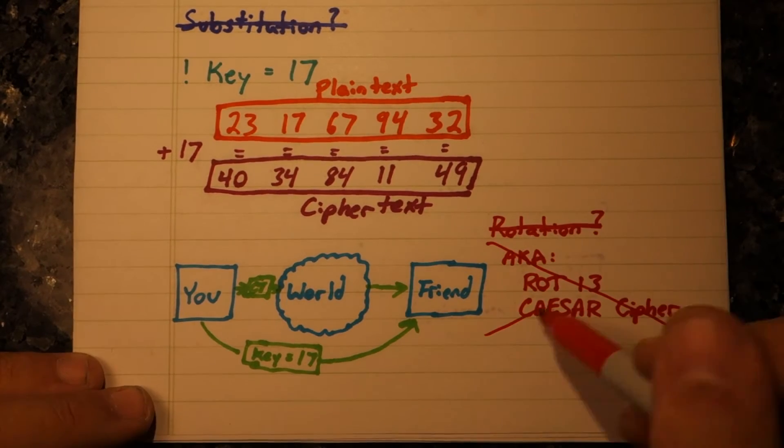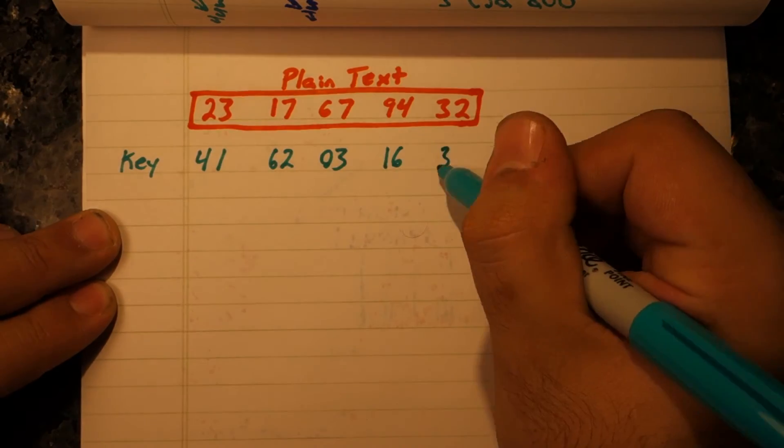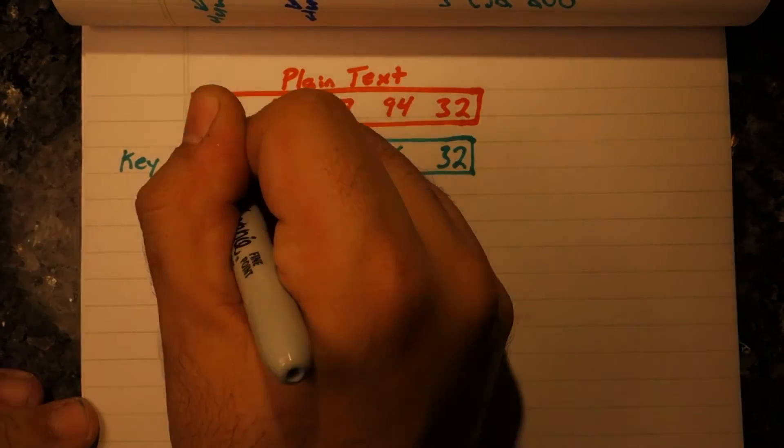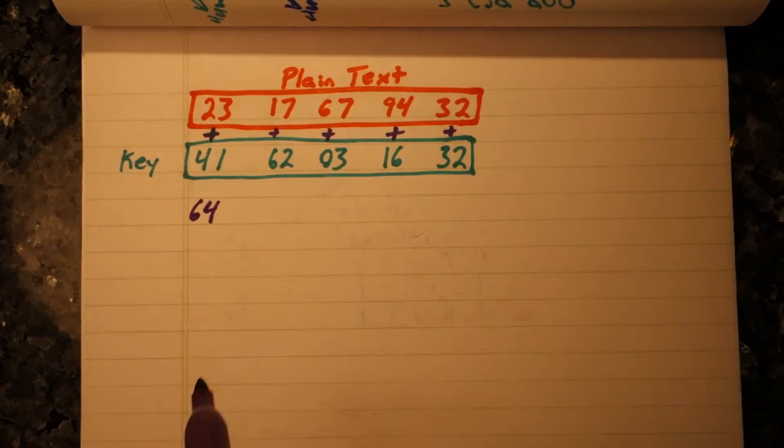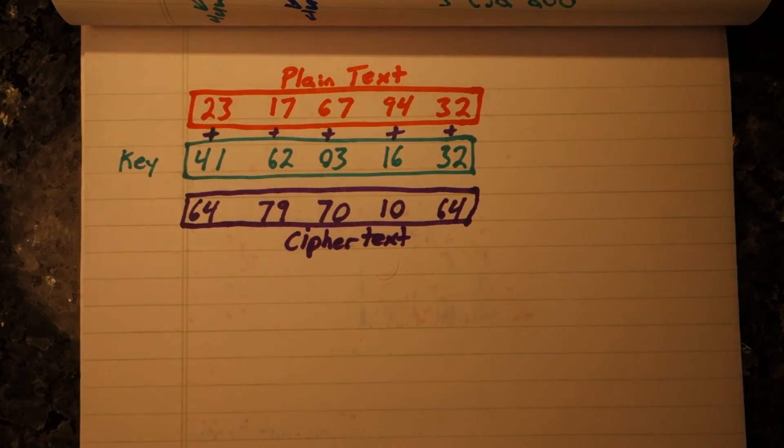So now what? Well, we can take the next natural step. Let's change the number that we add for each position. But now we have another problem. How do we communicate the series that we're adding to?